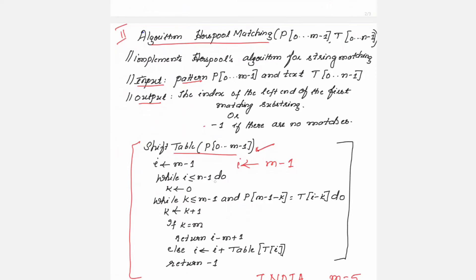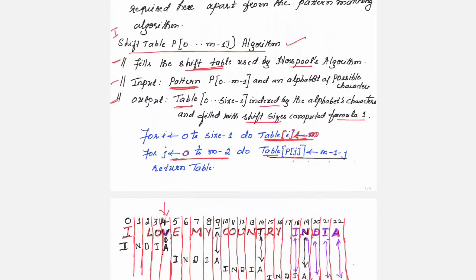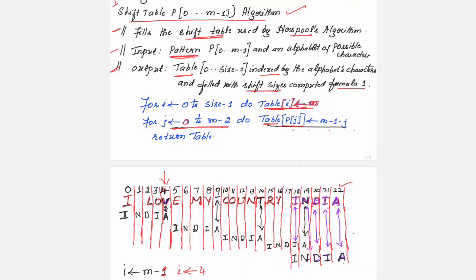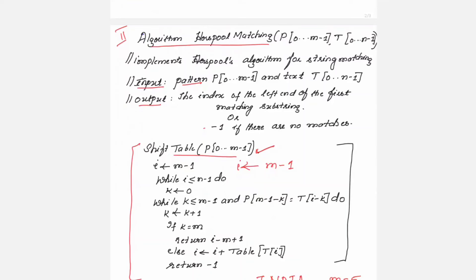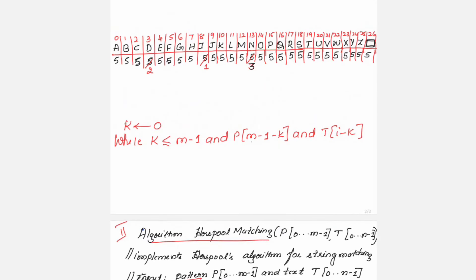The algorithm says: while i is less than or equal to n minus 1. Here n is the number of letters in the entire text. Our text has indices 0 to 22, that means 23 characters, so n equals 23. As long as i, starting at 4, is less than or equal to 22, you carry out the steps inside the loop.